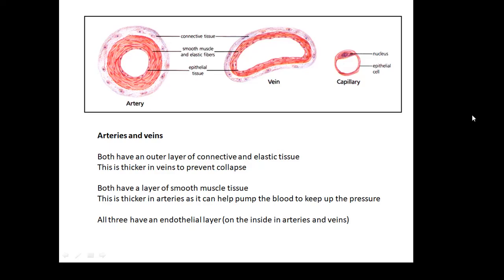Arteries and veins. Now, the structure of arteries and veins. Both have an outer layer of connective and elastic tissue. This outer layer of tissue is thicker in veins because veins are more likely to collapse because the blood pressure is lower in veins.